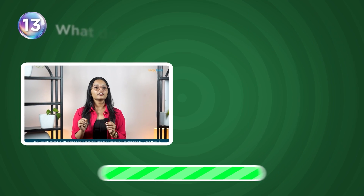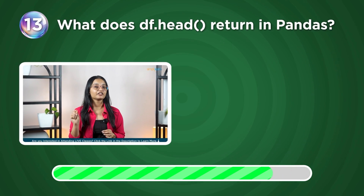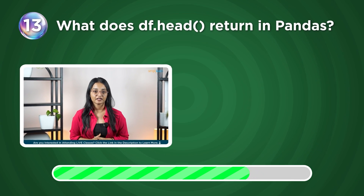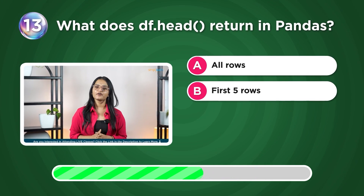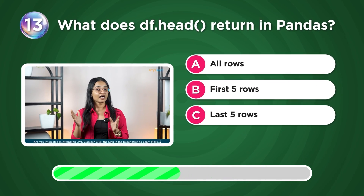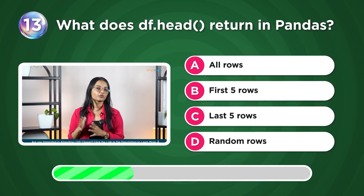What does df.head return in pandas? All rows, first 5 rows, last 5 rows, or random rows?